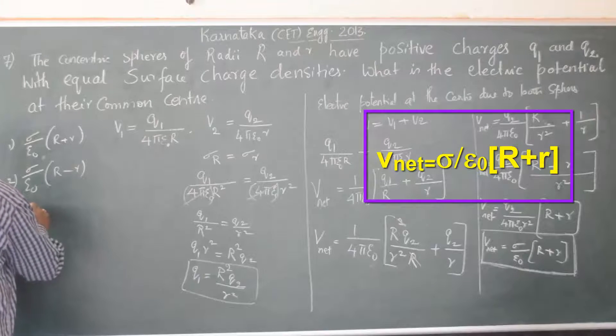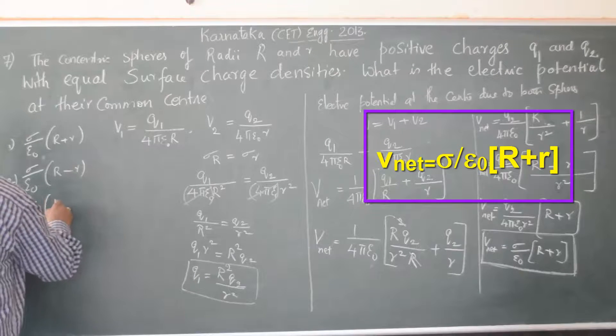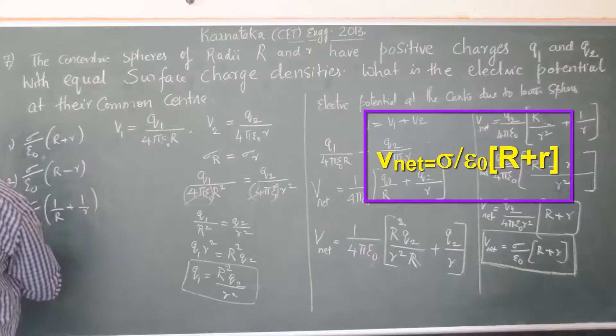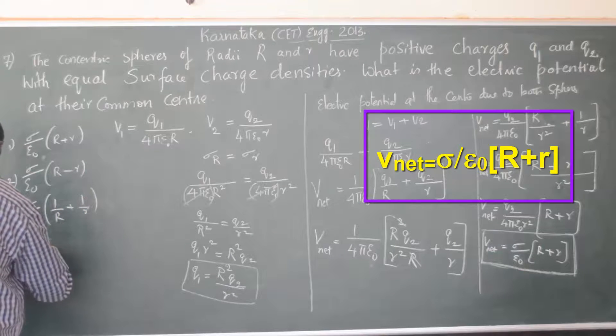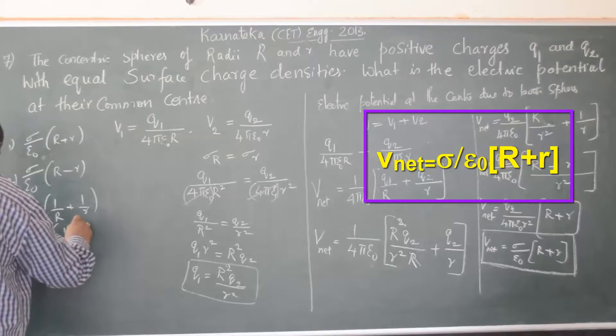The third alternative is sigma divided by ε₀ times (1/R plus 1/r). The fourth alternative is sigma divided by ε₀ times (R plus r) — but option one is the correct answer.